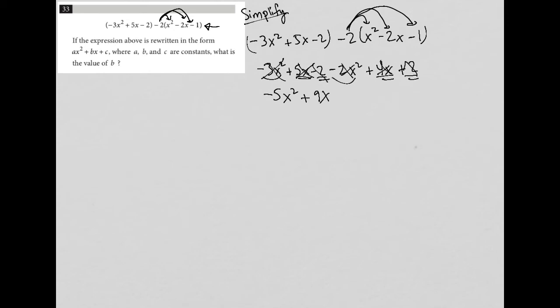So all of that, this entire long expression, turned into negative 5x squared plus 9x. The question says if the expression above is rewritten in the form ax squared plus bx plus c, where a, b, and c are constants, what is the value of b?